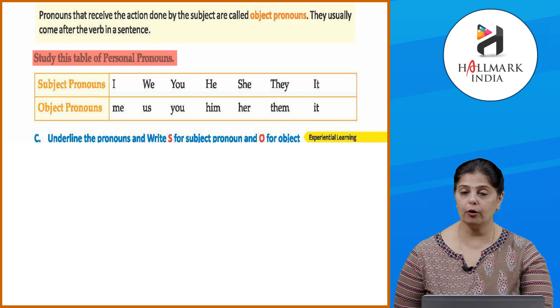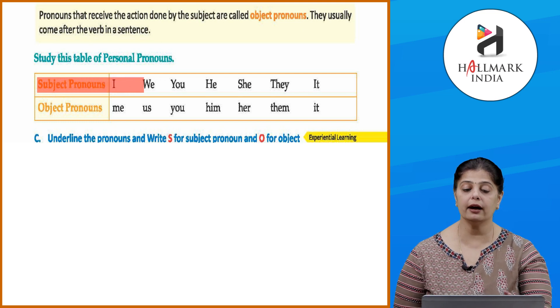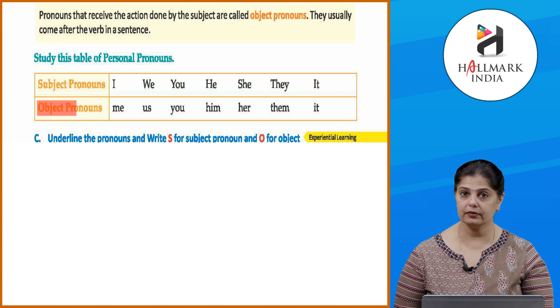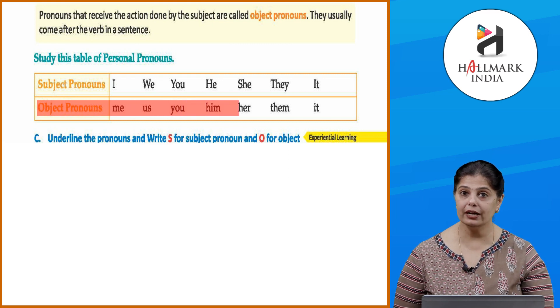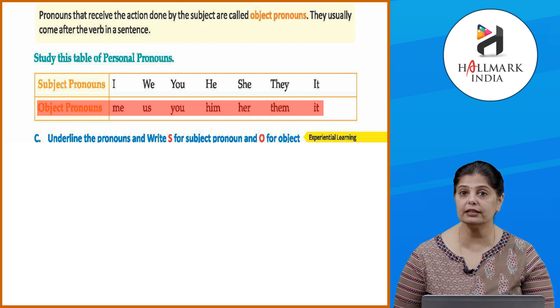Now study this table of personal pronouns — subject pronouns and object pronouns. Subject pronouns are: I, we, you, he, she, they, it. Object pronouns are: me, us, you, him, her, them, it. Now you will be able to differentiate what is the subject and what is the object. Start practicing the exercises — the more you practice, the clearer the concepts become. Now quickly do the exercises.